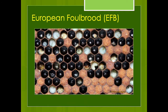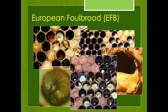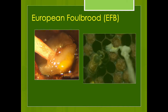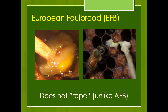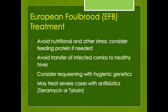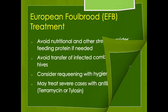To minimize European foulbrood, avoid nutritional and other stress — consider protein supplements. Avoid moving infected combs to other hives. Hygienic genetics can also help since the bees are more aggressive at cleaning out sick or dead brood. If necessary, you can use antibiotics — either oxytetracycline or tylosin. In the U.S. you will require a prescription from a veterinarian to get these antibiotics, and they may require photos or a sample of the brood comb to confirm you're dealing with EFB.